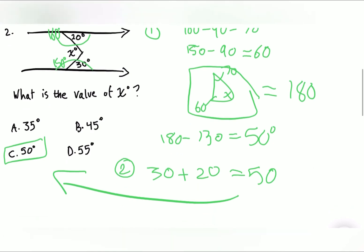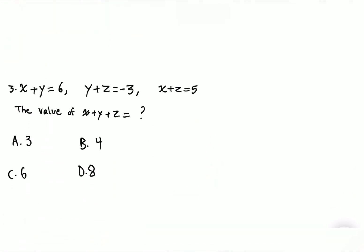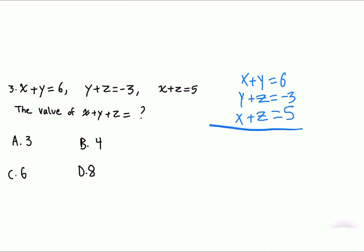Question three states: x + y = 6, y + z = −3, and x + z = 5. We need to find the value of x + y + z. I'll line up the three equations and add them all together.